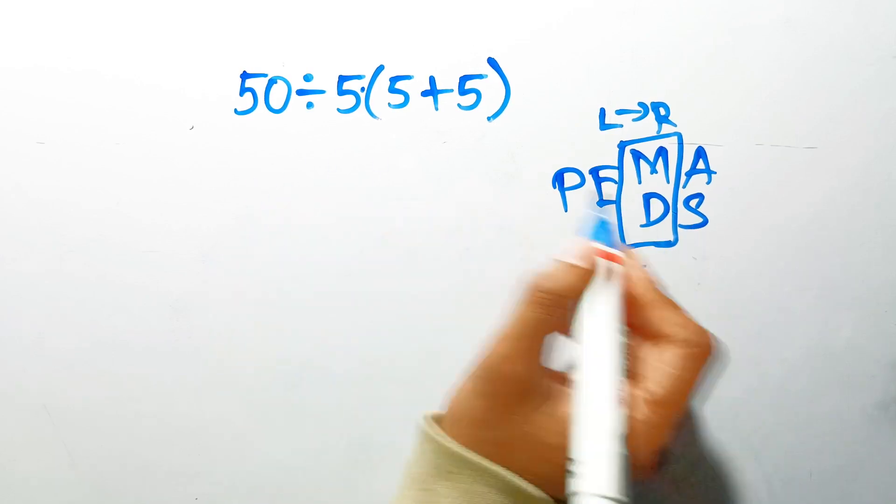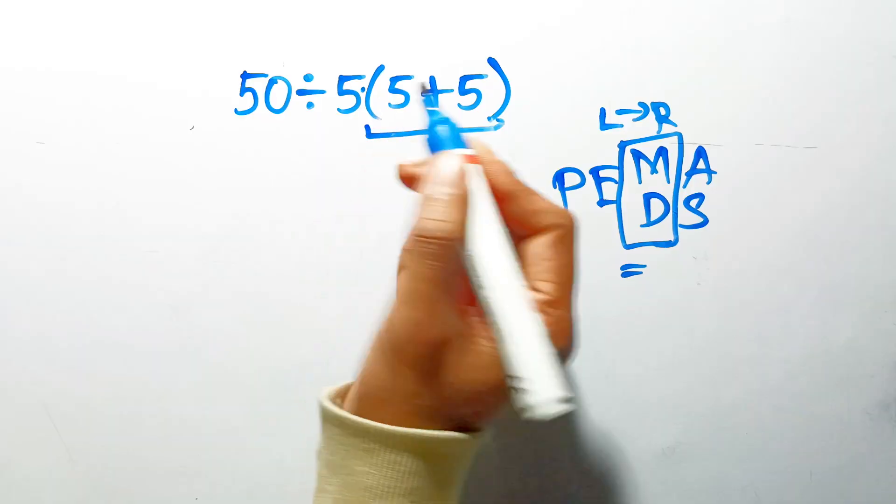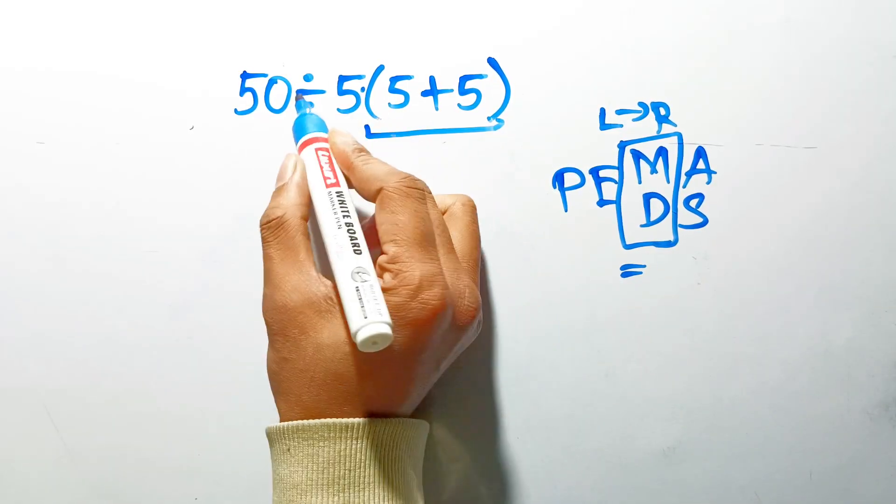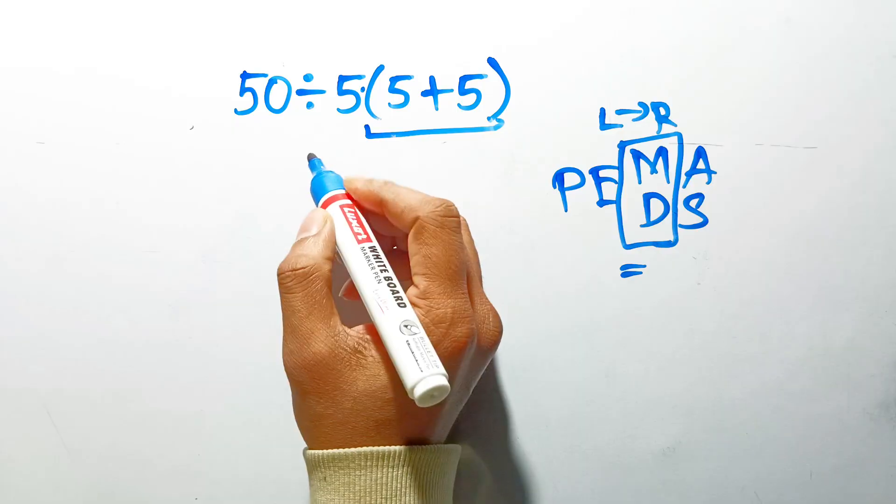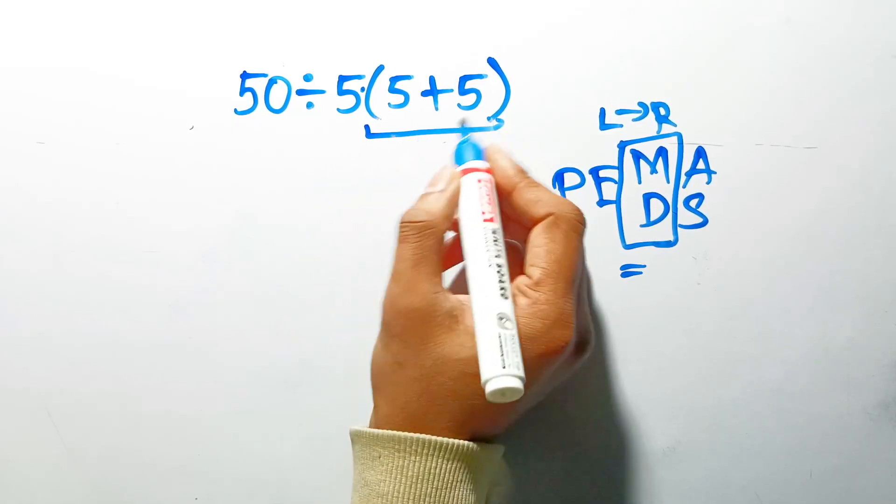Okay, so according to the PEMDAS, first we have to do this parentheses, then this division, and finally this multiplication. If we do this multiplication before this division, or try to simplify the right side first, it is wrong. So first, this parentheses.